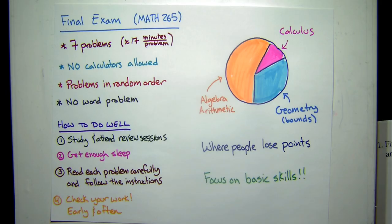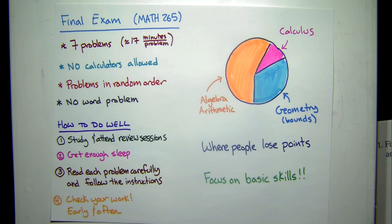Final exam. Some things you might want to know about the final — you probably should know these already. There are seven problems. It's a two-hour exam, and if you do the math — after all, you are engineers — seven problems, 120 minutes, means you get 17 minutes per problem plus one extra minute. I recommend you use that one extra minute to do your panic right at the start. Just panic for one minute, get it out of the way, and then be relaxed for the rest of the test.